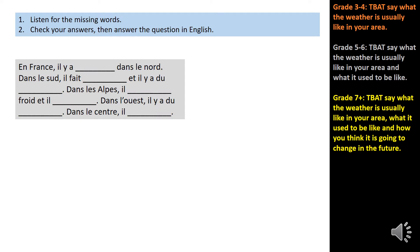Now a listening exercise. Just listen to the short passage and make a note of the missing words in French. En France, il y a des orages dans le nord. Dans le sud, il fait chaud et il y a du soleil. Dans les Alpes, il fait froid et il neige. Dans l'ouest, il y a du brouillard. Dans le centre, il pleut.